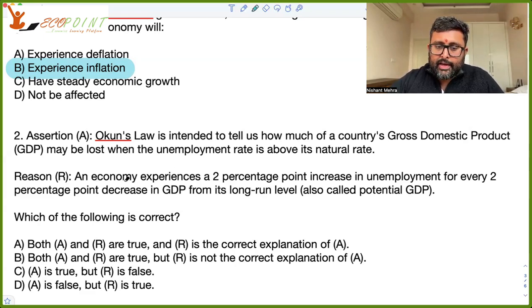Reasoning which they have given is, an economy experiences a 2 percentage point increase in unemployment for every 2 percentage point decrease in GDP from its long-run level. No, this is not a 1 is to 1 relationship. So generally what is seen is that in case if there is an increase in unemployment of around 1%, there is around 2% fall in GDP. So it is not a 1 is to 1 relation. So A is true, but R is not true. Means R is not the correct explanation of A, right? Or you can say A is true, but R is not true.